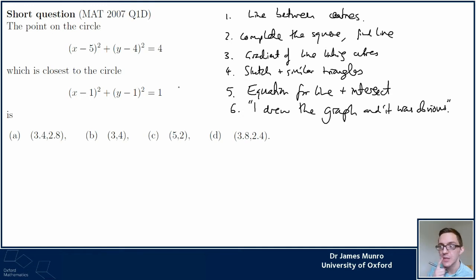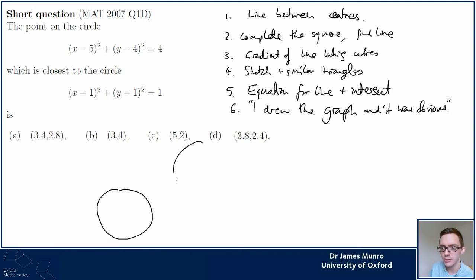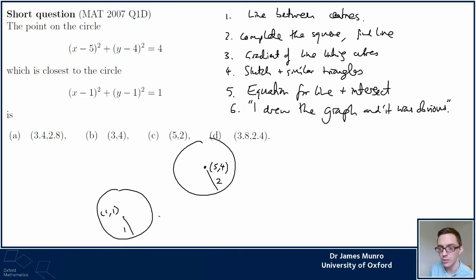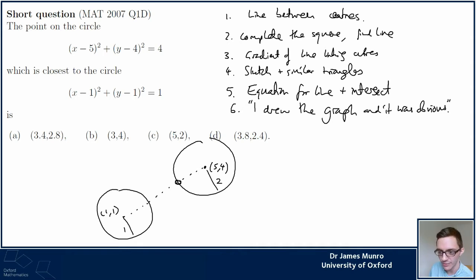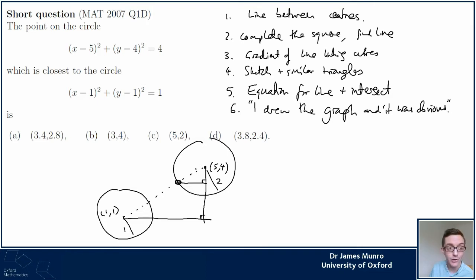The line-between-centers method: one circle is at (5, 4) with radius 2, and the other is at (1, 1) with radius 1. We think about the line joining the centers, because the closest point is where that line meets this inner circle. Some people want to think about the gradient of this line, or similar triangles - you draw on this big triangle and think about a similar smaller triangle.